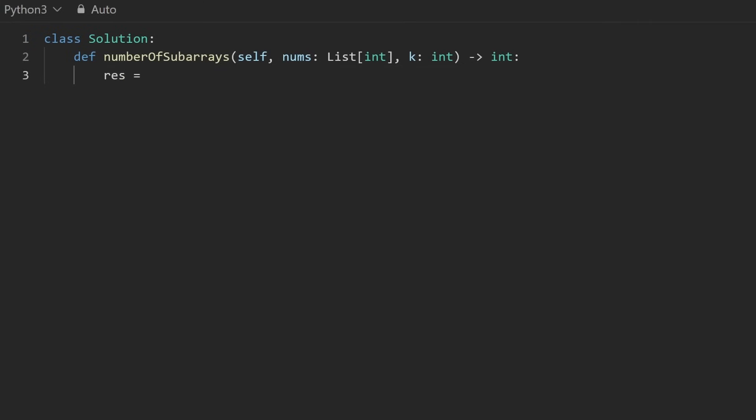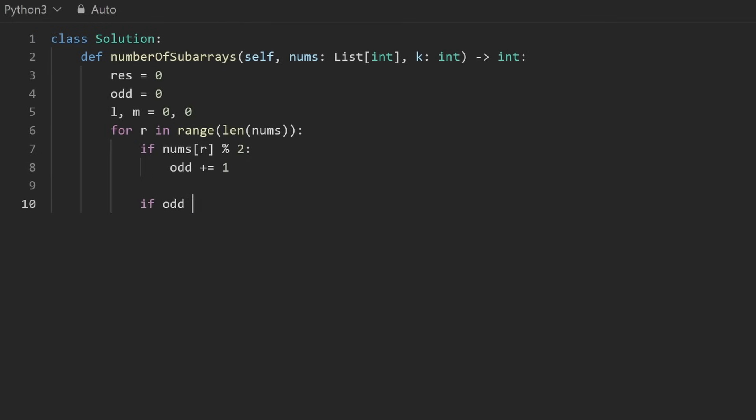So I'm going to initialize the result to be zero. And then I'm going to have a variable telling us how many odd numbers we have in the current window. And lastly, I'm going to declare the pointers left, middle. And for right, I'm just going to do that in the loop itself. So going through every element in the input. And we're going to start with the easy stuff. If the number at this index is odd, we know that like this, we're going to go ahead and increment odd. Pretty easy. Now, there's another case where if odd is exactly equal to K.